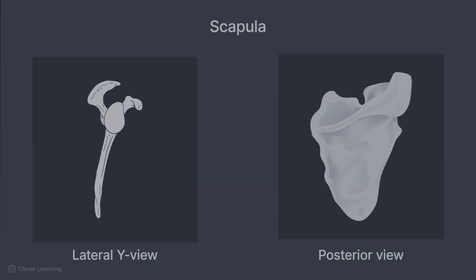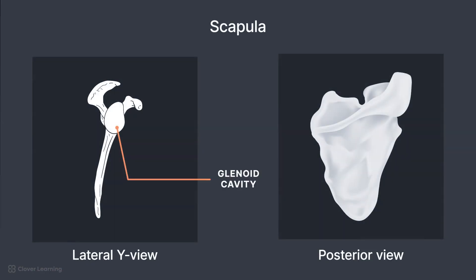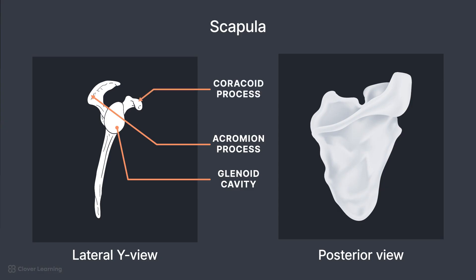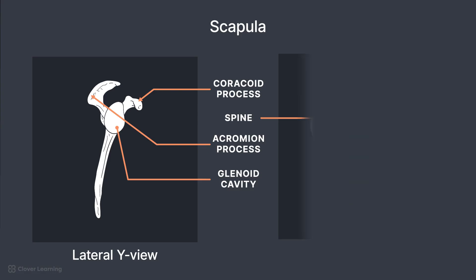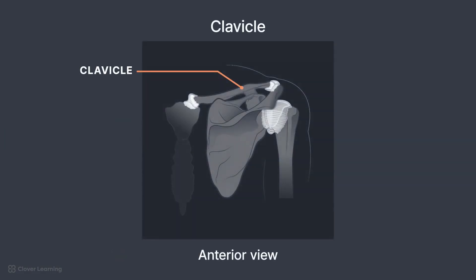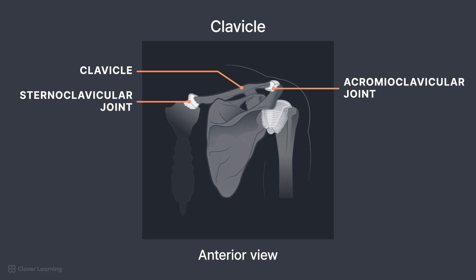On the scapula, the glenoid cavity attaches to the humeral head. The acromion extends over the shoulder joint to articulate with the clavicle, and the coracoid process projects anteriorly. On the posterior aspect, the scapular spine is an important dividing structure for muscles. The clavicle serves to connect the shoulder to the axial skeleton via the acromioclavicular and sternoclavicular joints.